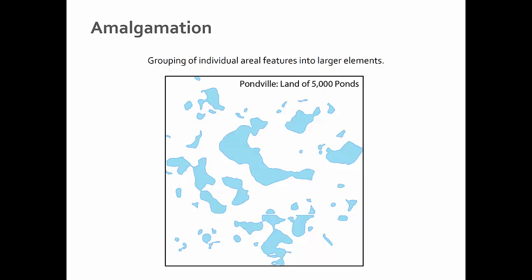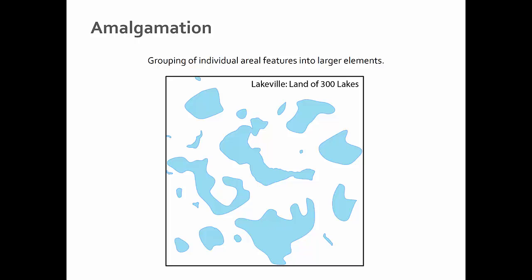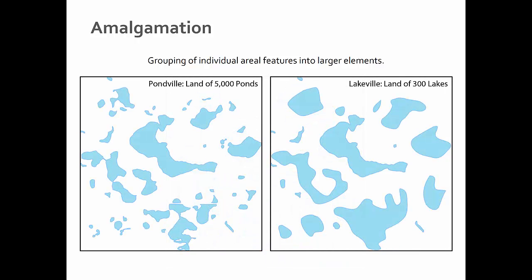Amalgamation is the grouping of individual areal features into larger elements. Here we have a bunch of lakes — it's probably northern Minnesota. Here we have a representation of the same area, but we've amalgamated the smaller lakes into larger ones. This is really useful if the level of detail is not necessary for the scale of your map, or if it's tangential to the information you're trying to communicate, because too much detail will distract from your primary message. The map on the right is less distracting and better focuses readers' attention on particular lakes.